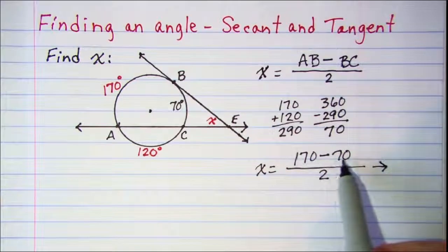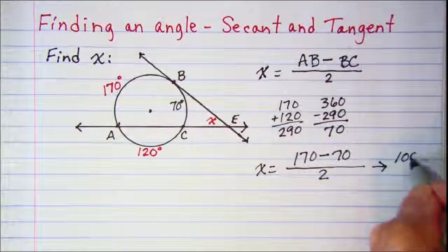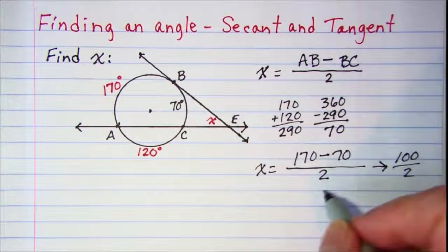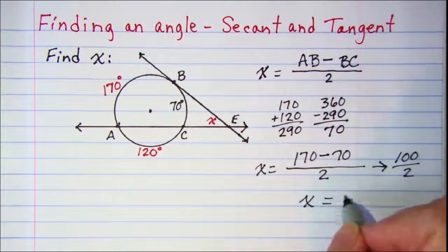170 subtract 70 is 100. Divide by 2 and we get x is equal to 50.